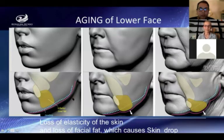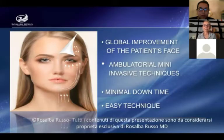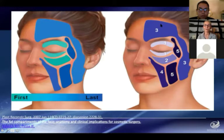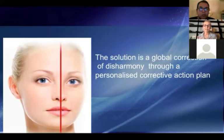You can see what happens to the jawline — when we are young and then as time passes how it modifies. It is important to tighten in order to have good rejuvenation. The global improvement of the patient's face is important, and we aim to do an ambulatorial mini-invasive technique with minimal downtime. The solution when we want to rejuvenate is a global correction of the disharmony through a personalized corrective action plan.